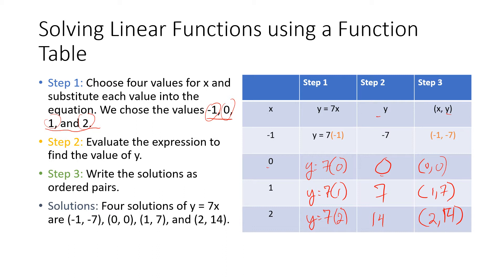So that's one way to solve it, and we have four solutions: negative 1 and negative 7; 0 and 0; 1 and 7; and 2 and 14. We've written them out here. So that's one way to solve these, and that is using the table.